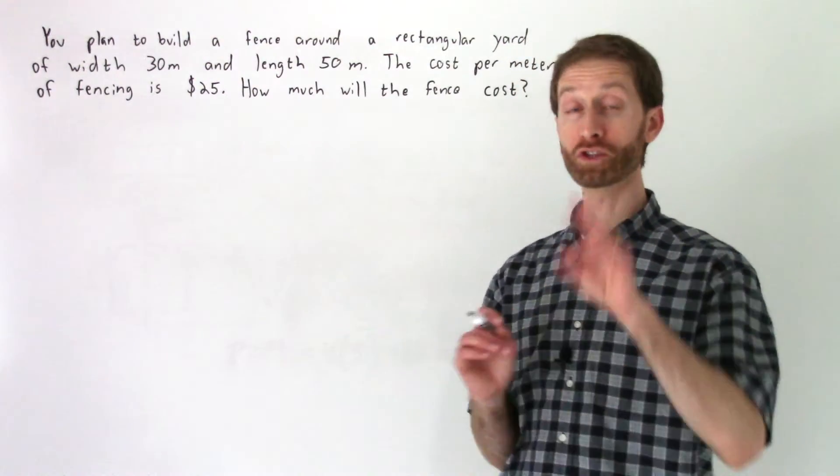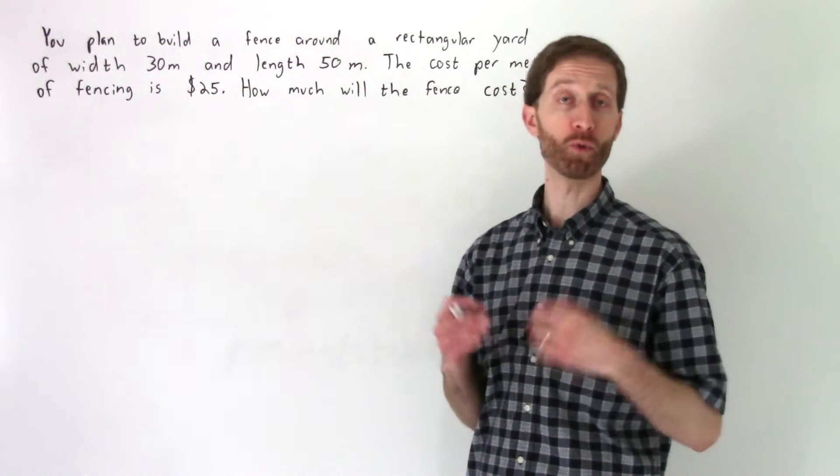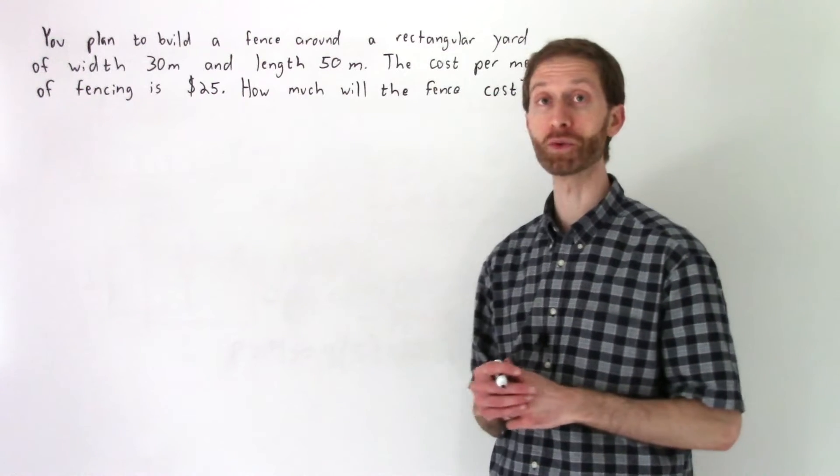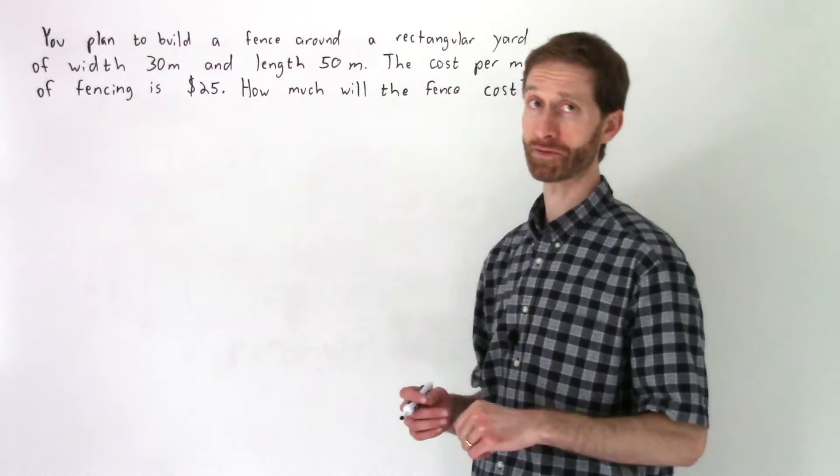In this video we are going to go over two word problems. The first word problem will have everything to do with the perimeter and that'll be the perimeter of a rectangle, and the second word problem will have something to do with the area of a rectangle. So let's jump into this first word problem.